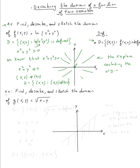Let's do the next example. Find, describe and sketch the domain of g(x, y) = √(x − y). The domain is the set of all (x, y) such that √(x − y) is defined. That's just the definition.